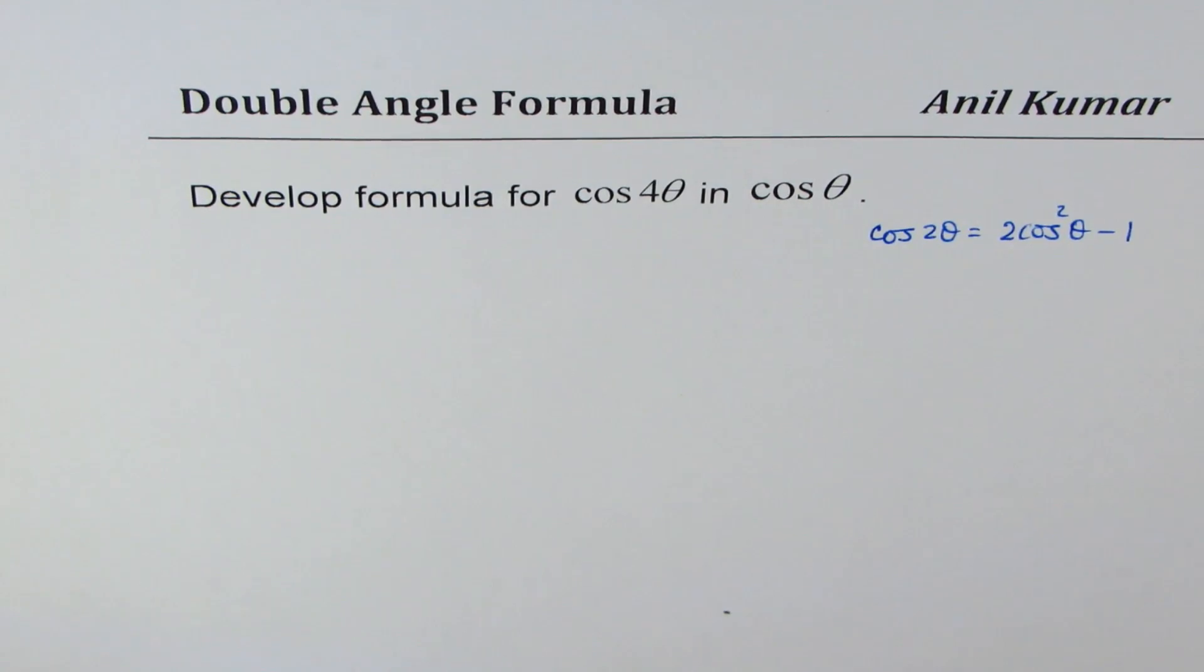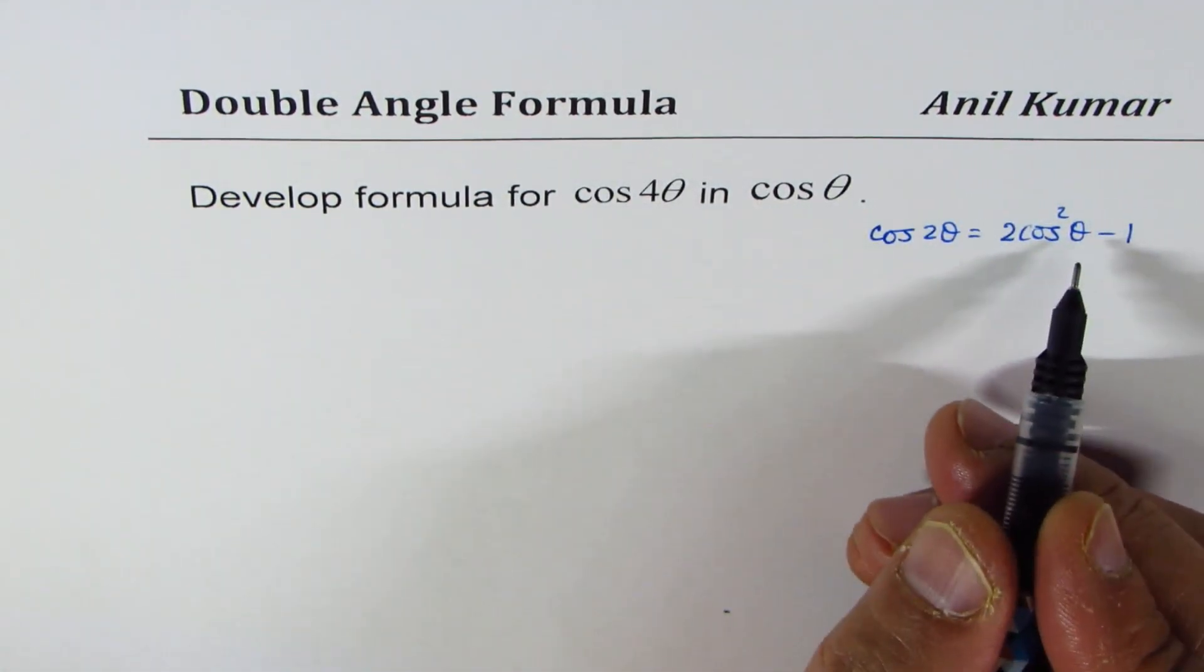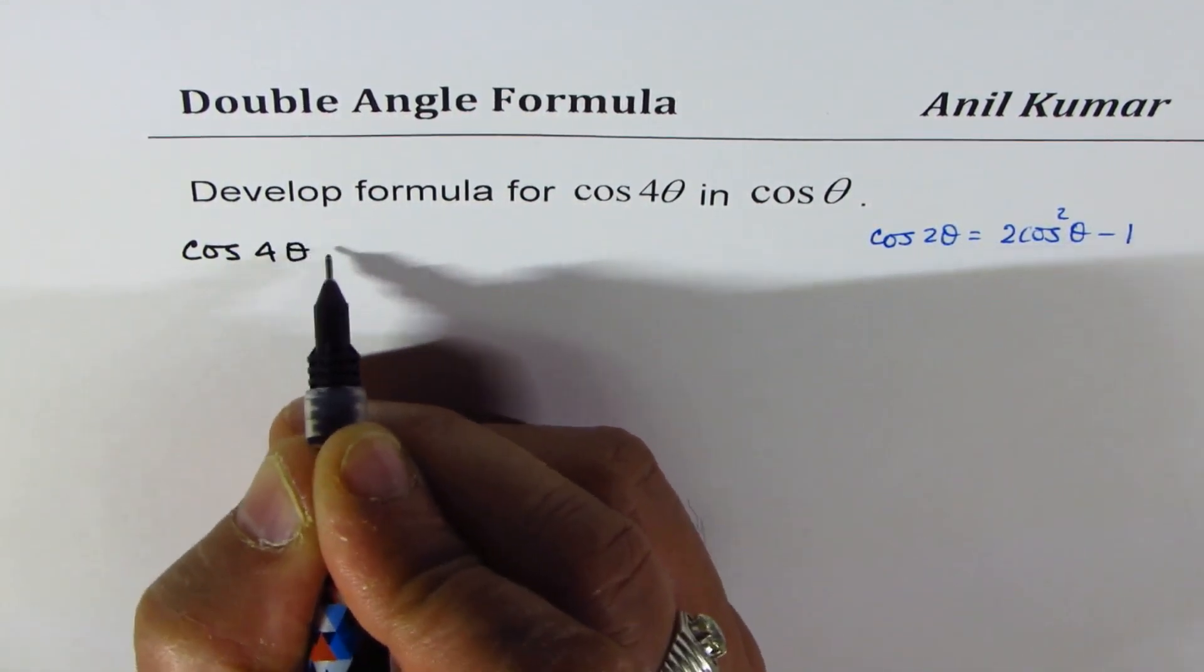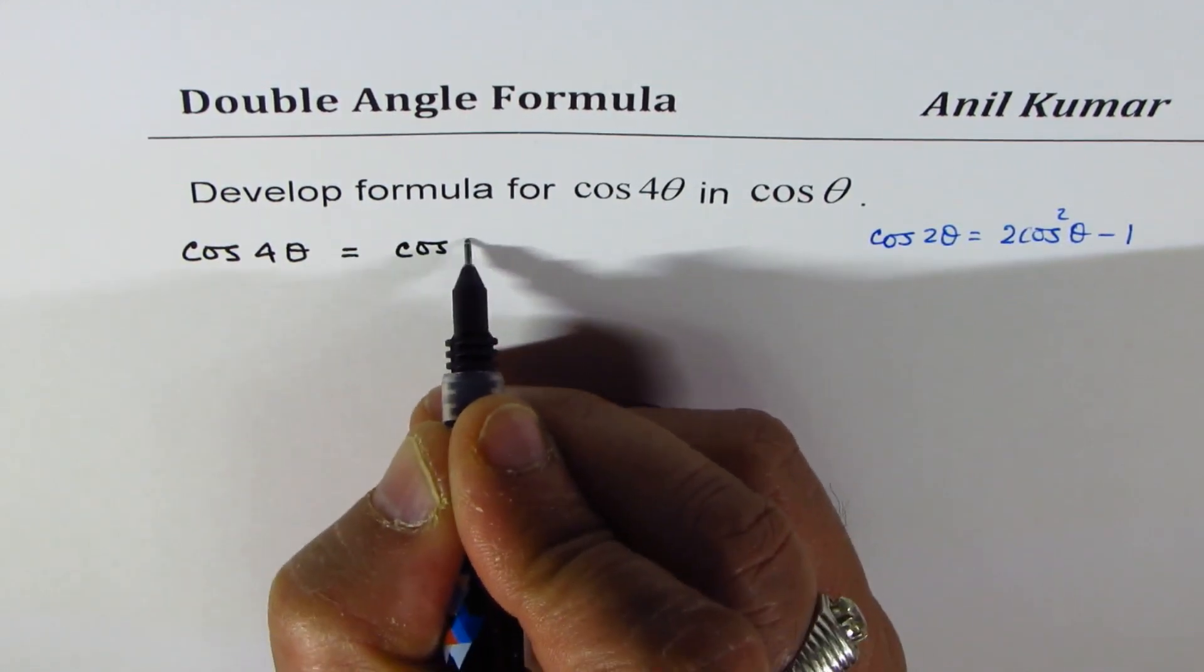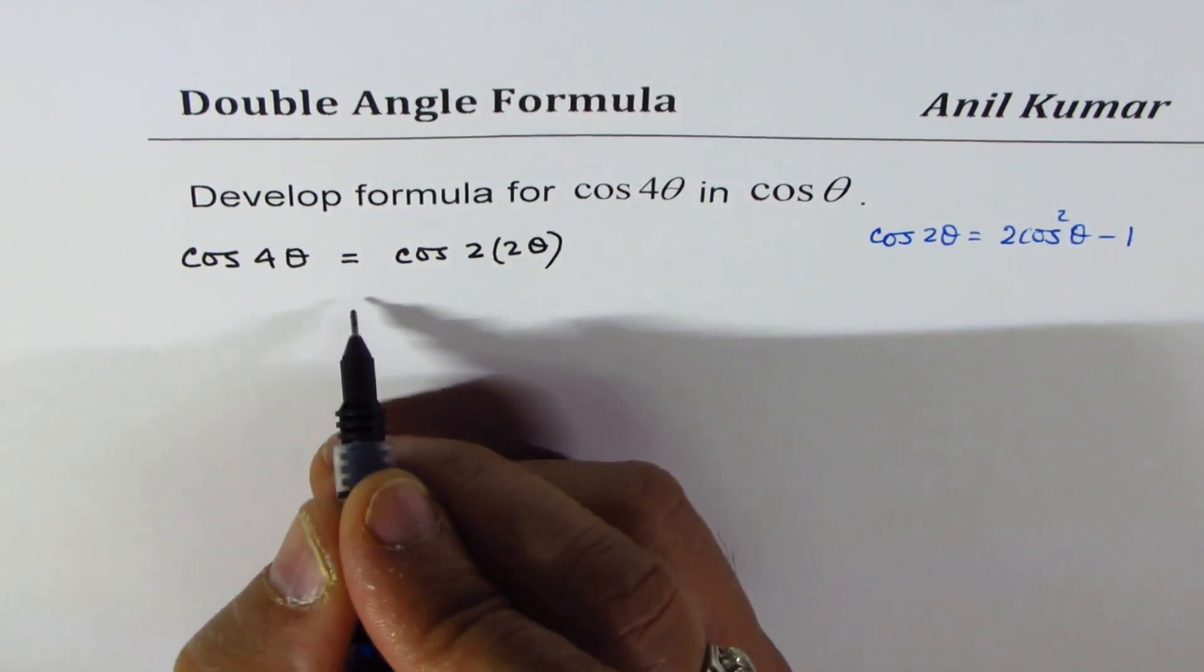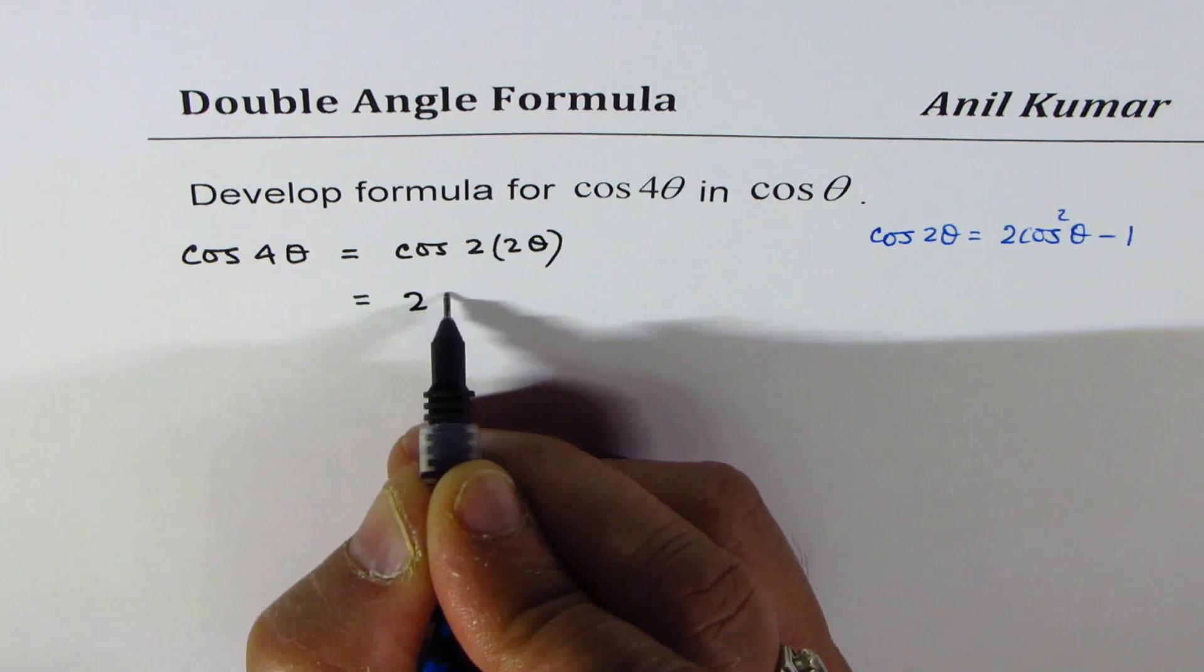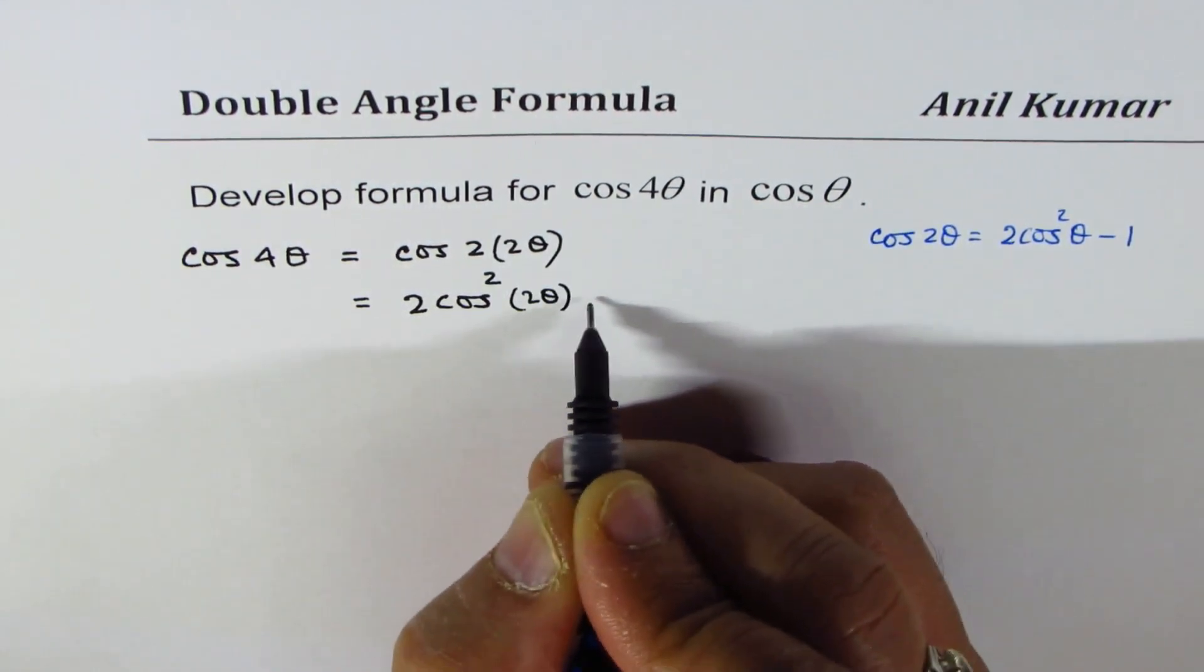So let us begin by writing cos 4θ using this particular formula. I could write cos 4θ as equal to cos of 2 times 2θ. So we can use this double angle formula. We can write this as 2 times cos²(2θ) minus 1.